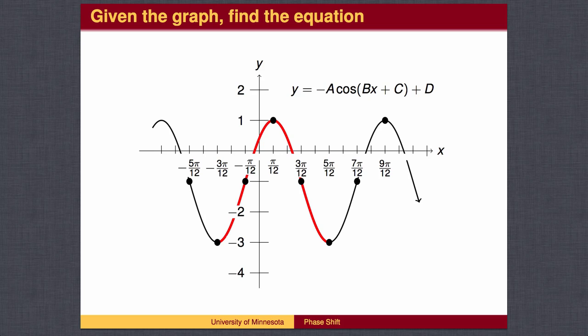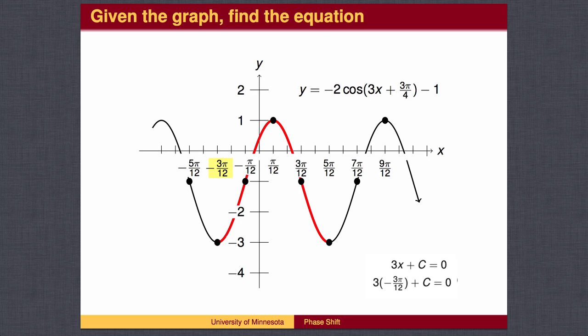Let's try it one more time with an upside-down cosine wave. Again, the amplitude is 2, the center line is at negative 1, and b equals 3. The phase shift is negative 3 pi over 12, so 3 times negative 3 pi over 12 plus c equals 0, making c equal to 3 pi over 4. This gives us the equation of the graph. You can find many more equations for this graph — all you need is to find one complete wave and figure out the values of a, b, c, and d from that wave.